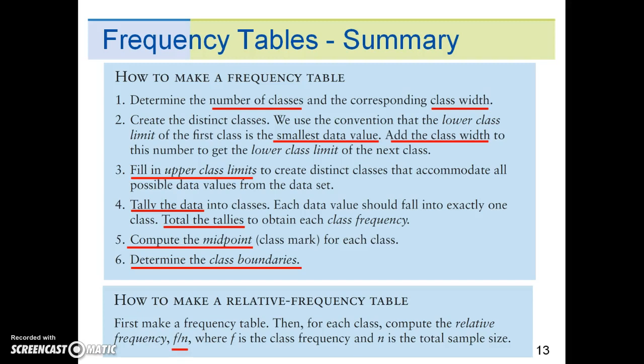To make a relative frequency table, we have one additional step. So we first make a frequency table, then for each class compute the relative frequency, f divided by n, where f is the class frequency and n is the total sample size. As such, f divided by n is simply the proportion.